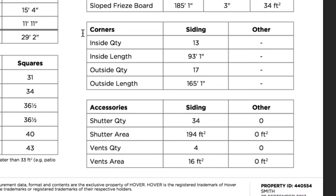In the corners table, we'll provide you the total count of inside and outside corners and the linear footage for both. In the lower right-hand corner, you'll find the accessories table where we'll show you the shutter and gable vent counts, assuming that we can see them in the imagery.